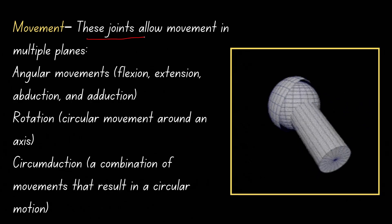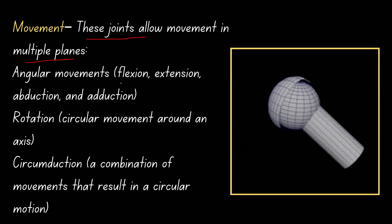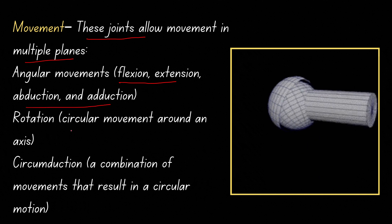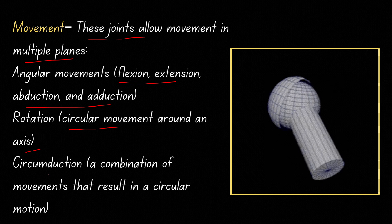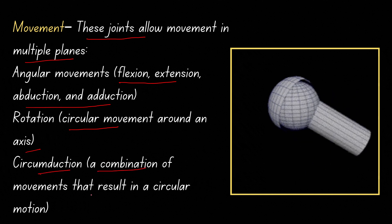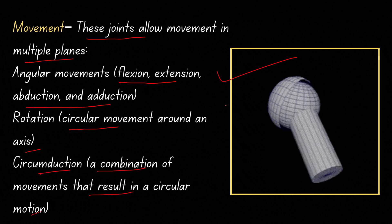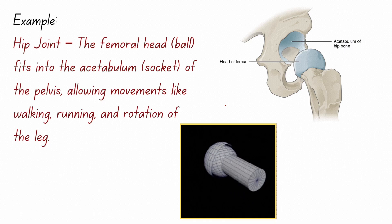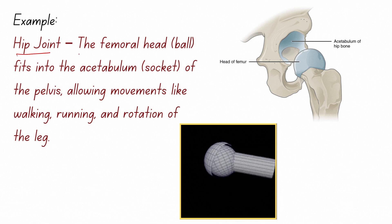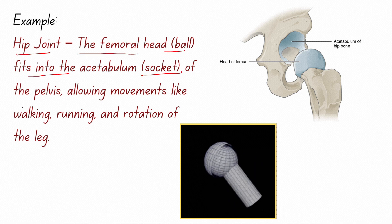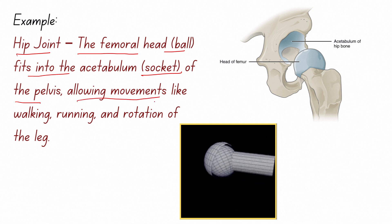The ball-and-socket joint allows movement in multiple planes: flexion, extension, abduction, adduction, rotation around an axis, and circumduction — a combination of movements resulting in circular motion, as shown in the animation. A typical example is the hip joint, where the femoral head (ball) fits into the acetabulum (socket) of the pelvis, allowing movements like walking, running, and rotation of the leg.